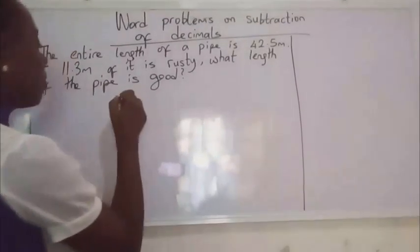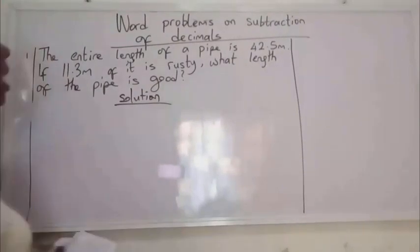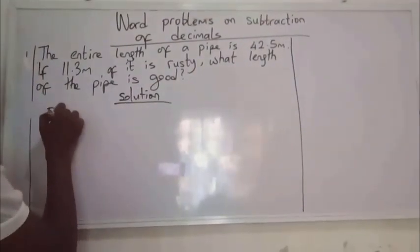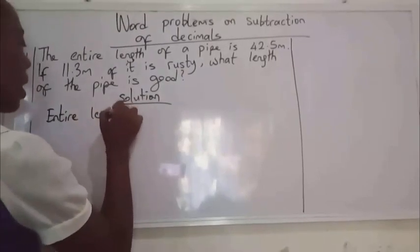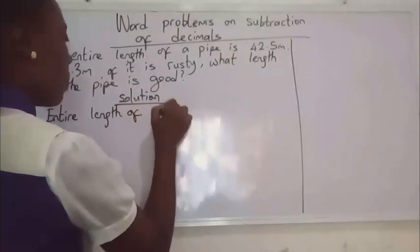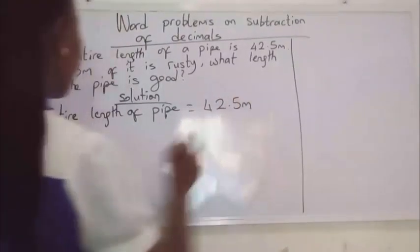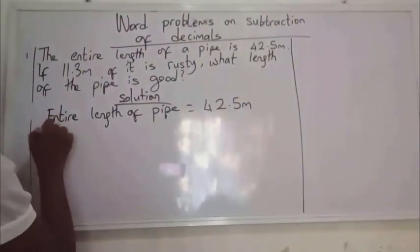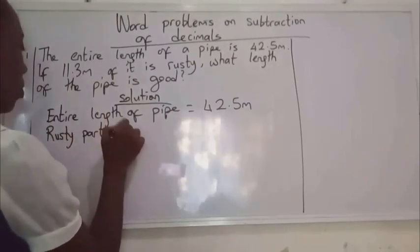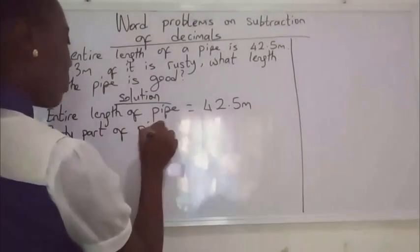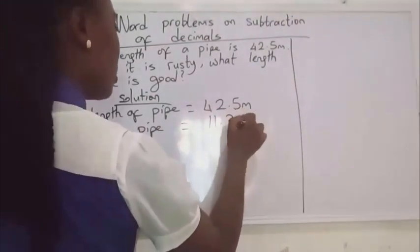Solution. The entire length of pipe is 42.5 meters. The rusty part of the pipe is 11.3 meters.